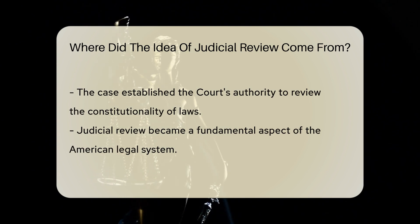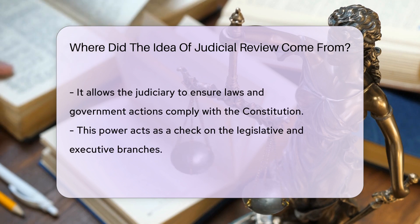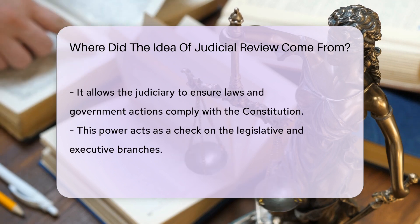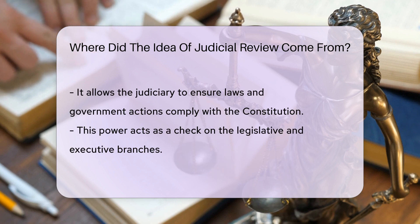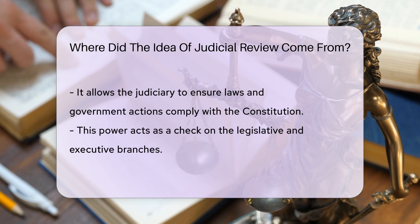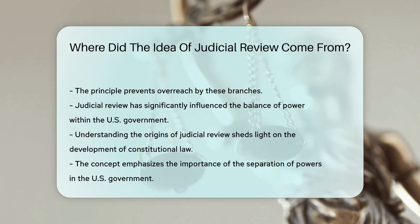Judicial review allows the judiciary to ensure that laws and government actions align with the Constitution. This power serves as a check on the legislative and executive branches to prevent overreach. The concept of judicial review has been pivotal in shaping the balance of power within the U.S. government. Understanding its origins provides insight into the evolution of constitutional law and the separation of powers.